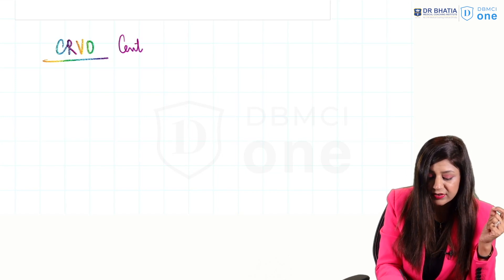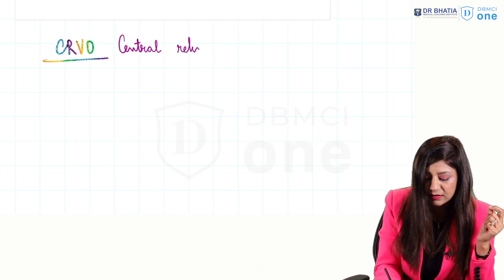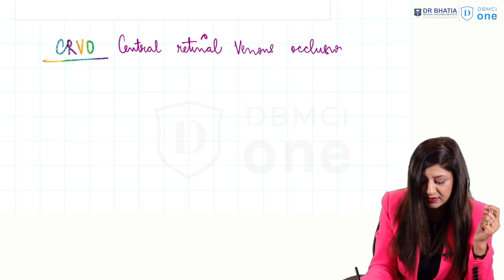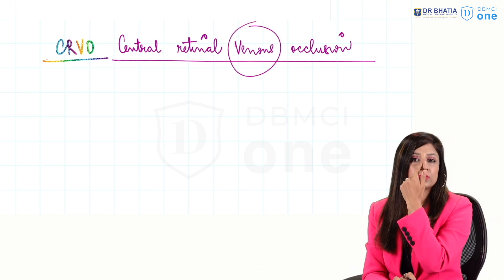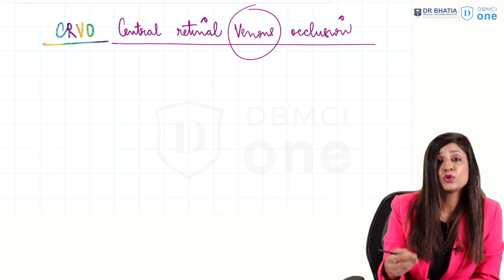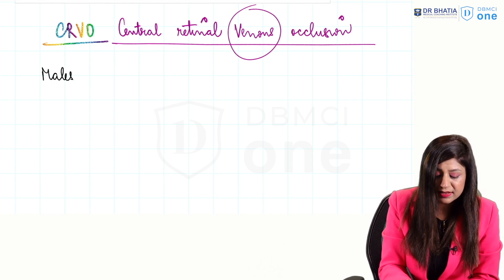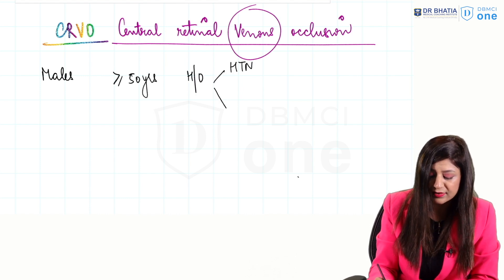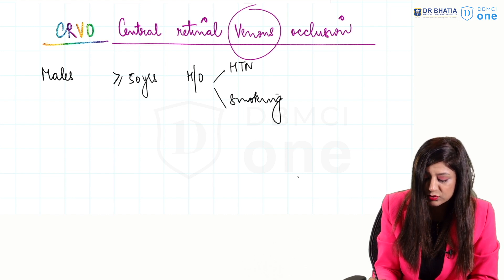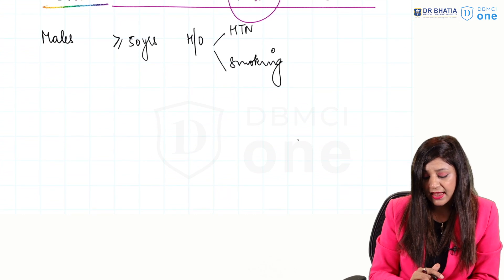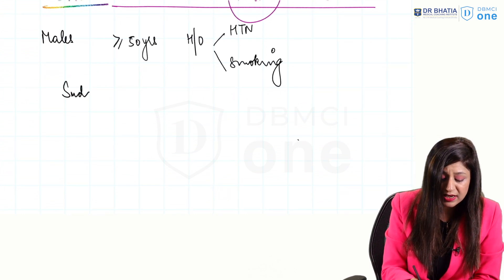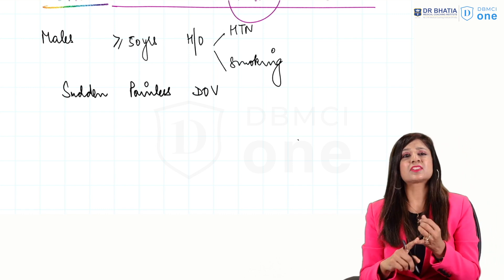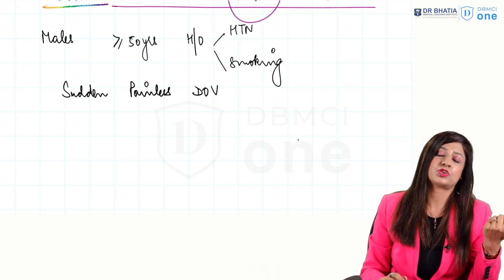CRVO - Central Retinal Venous Occlusion. Looking at the clinical scenario, this is also more common in males, more than 50 years of age. You are going to get a history of hypertension and smoking in these kinds of patients. The clinical feature will be the same - sudden as well as painless diminution of vision.